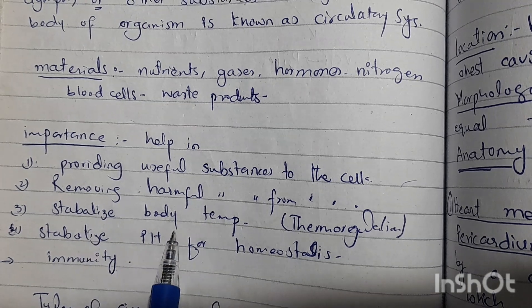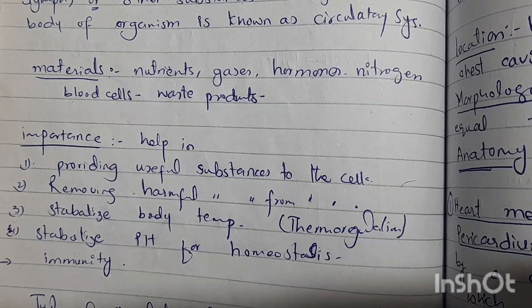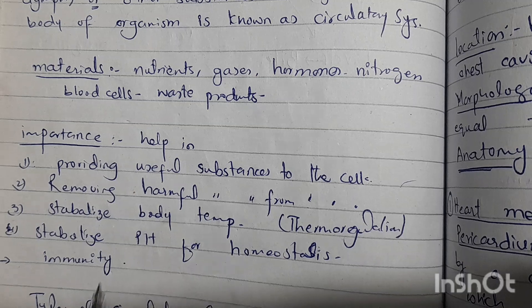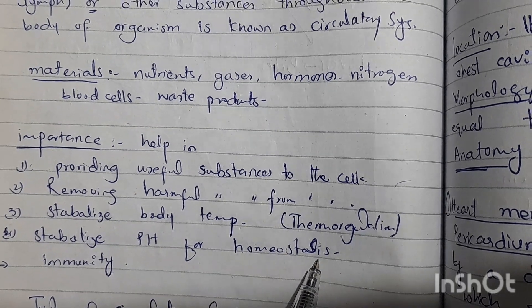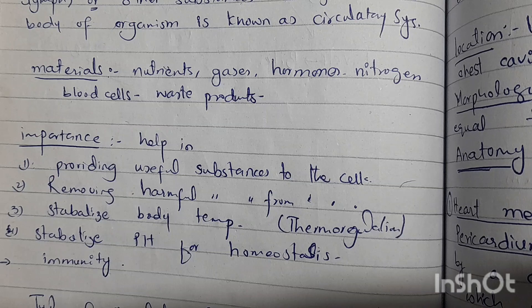The circulatory system stabilizes body temperature — what we call thermoregulation. Heat is also transported in our body because it is dissolved in the blood, and the heat goes from one place to another as needed. It also stabilizes pH for homeostasis — whether the environment is acidic, neutral, or alkaline — and blood plays a role in regulating this pH.